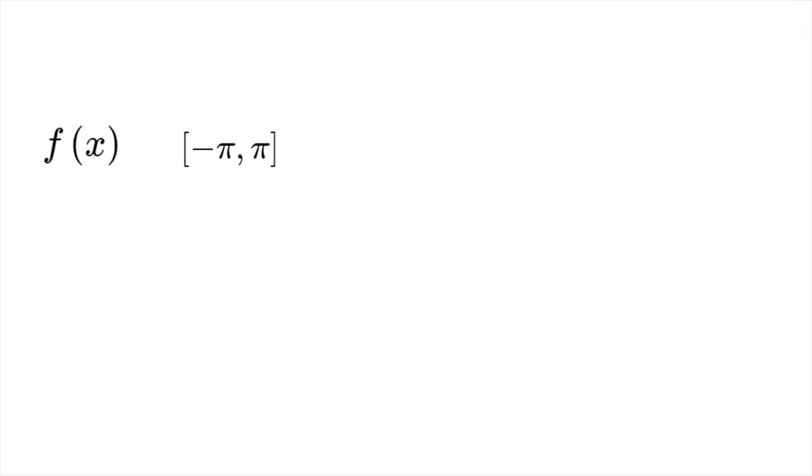Let a function f of x be defined on the closed interval of minus pi to pi. Using the well-known Euler's formulas cos phi equals e power i phi plus e power minus i phi upon 2 and sine phi equals e power i phi minus e power minus i phi upon 2i,